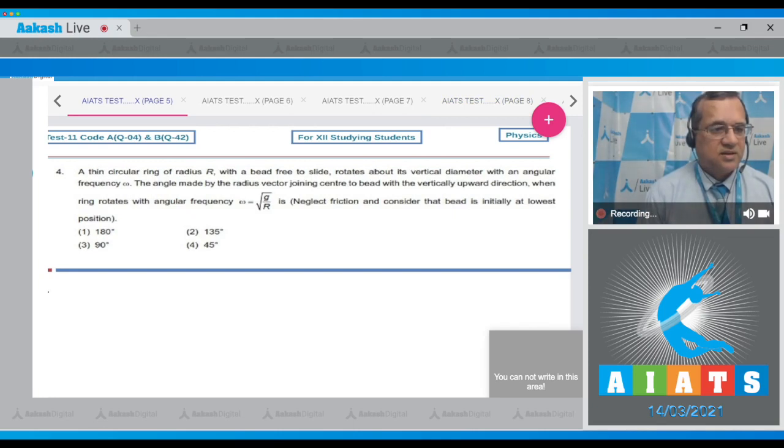Question number four says that a thin circular ring of radius r with a bead free to slide rotates about its vertical diameter with angular frequency omega. Find the angle made by the radius vector joining the center to the bead with the vertical upper direction when the ring rotates with angular frequency omega equals square root of g by r. Neglect friction and consider that the bead is initially at the lowest position.